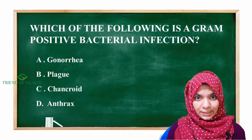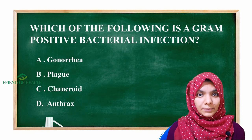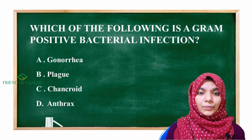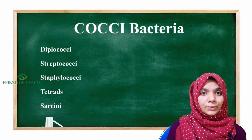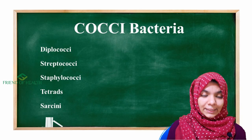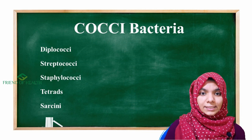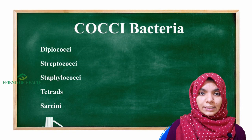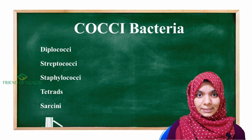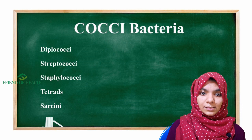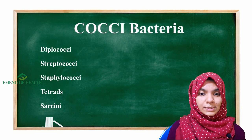Now let us see some examples of cocci bacteria: diplococci, streptococci, staphylococci, tetrads, and sarcinae. These are the bacteria that come under the cocci group. Tetrads and sarcinae are some rare bacteria that we don't read most of the time and are not that frequently tested.